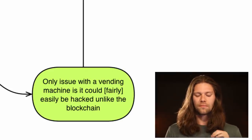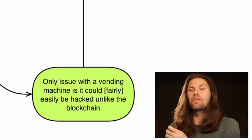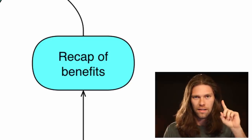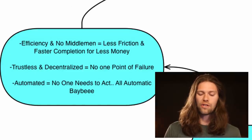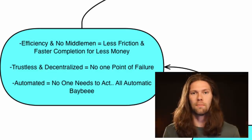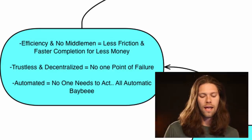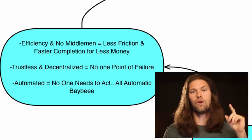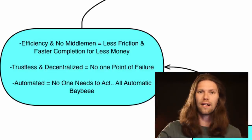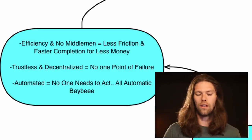The only issue with the vending machine is it could fairly easily be hacked, whereas a blockchain is almost impossibly hack-proof. Recap of the benefits of smart contracts: efficiency and no middlemen, meaning less friction, faster completion, and less money to execute any deal. Everything becomes more efficient and less costly. Trustless and decentralized — no one point of failure. And automated — no one needs to act, it's all automatic.